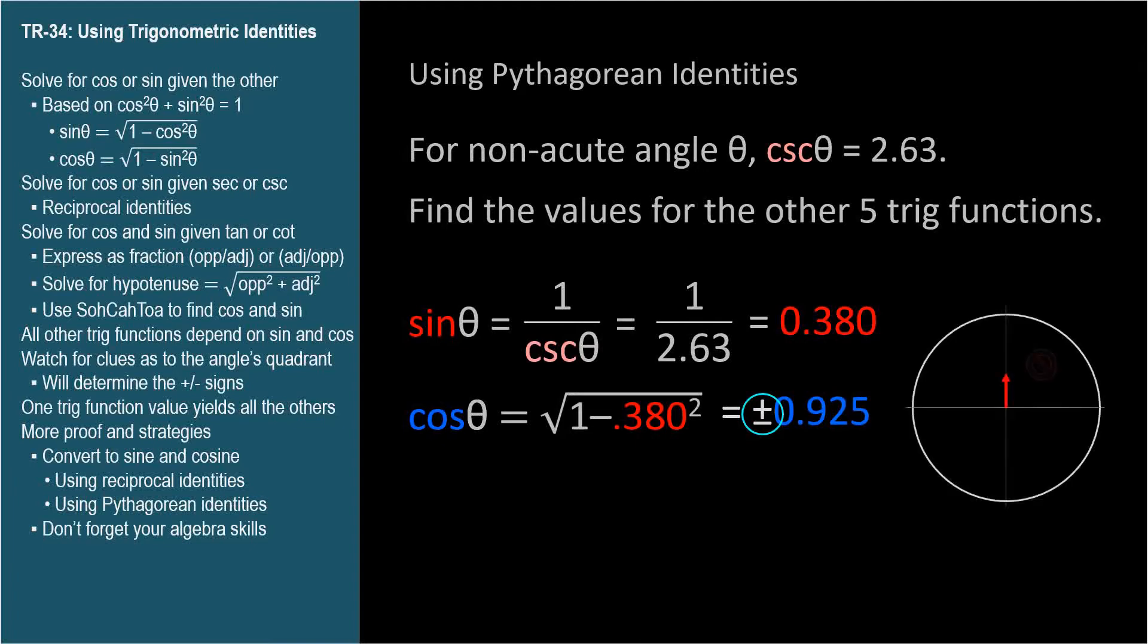In this case, we're told the angle is nonacute. Since the sine is positive, the cosine can't also be positive, or it would be in quadrant one with an acute angle. So the cosine must be negative, negative 0.925.